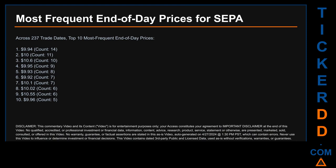Across 237 trade dates, the top 10 most frequent end-of-day prices were: 1. $9.94 happened 14 times; 2. $10.00 happened 11 times; 3. $10.60 happened 10 times; 4. $9.95 happened 9 times; 5. $9.93 happened 9 times.